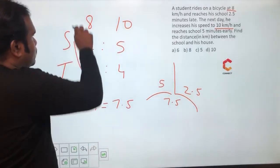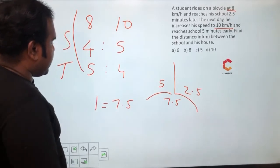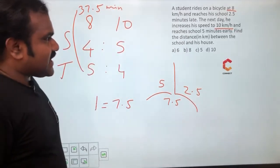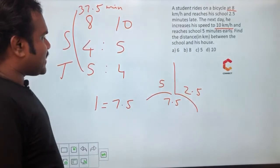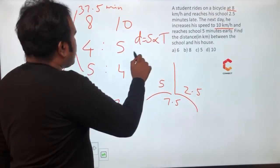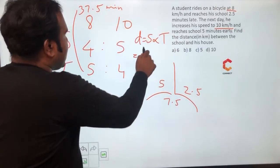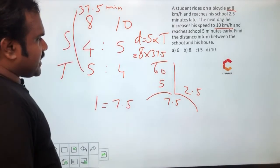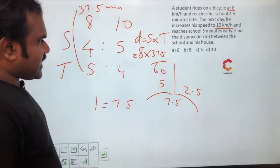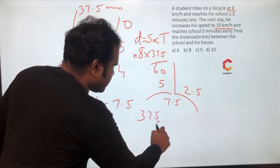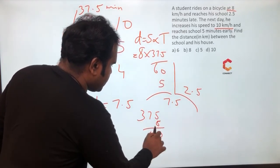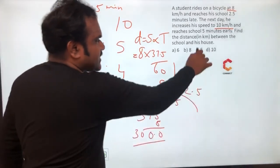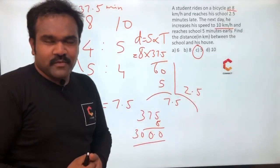Five parts equals 37.5 minutes. The question asks to find the distance in kilometers between school and his house. Distance equals speed multiplied by time. Speed is 8, time is 37.5 minutes, so 8 × (37.5/60) = 300/60 = 5 kilometers. The answer is 5 kilometers.